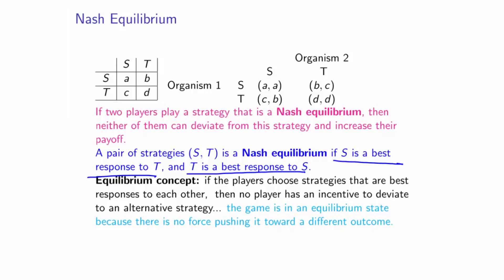We had been using the word equilibrium as an analogy for steady state. With differential equation models, equilibrium is associated with the state in which there is no change — it's the point at which the derivative equals zero, meaning there is no change. Here, the idea of equilibrium is summarized as: the game is in an equilibrium state because there is no other force that would push the game towards a different outcome.